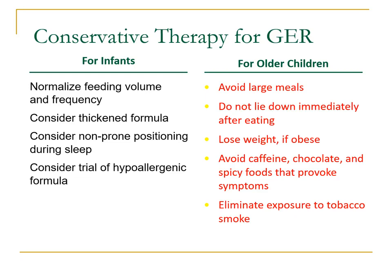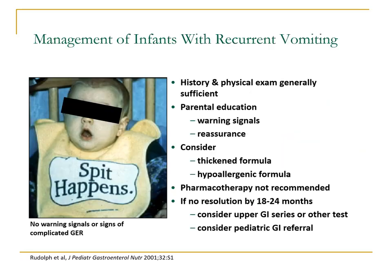For older children, advise avoiding large meals, not lying down immediately after eating, losing weight if obese, and avoiding foods and beverages that relax the lower esophageal sphincter — such as caffeine, chocolate, and spicy food. Also advise eliminating exposure to tobacco smoke, as even passive smokers have increased risk of reflux symptoms secondary to nicotine.